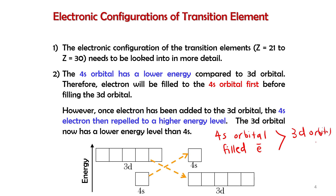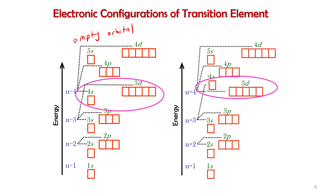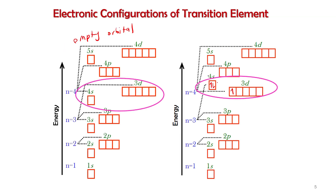Looking at the energy diagram: for empty orbitals, 4s has lower energy than 3d. But after filling electrons into both 4s and 3d, due to electron repulsion, filled 4s orbital has higher energy compared to filled 3d. That is why when we remove electrons, we remove from 4s first — the highest energy orbital.